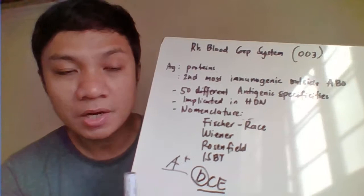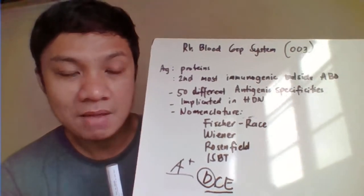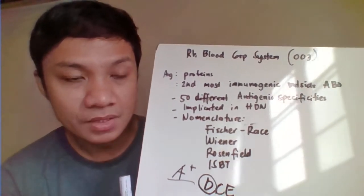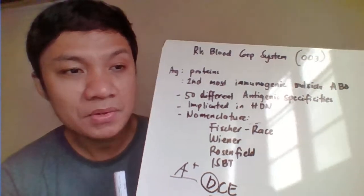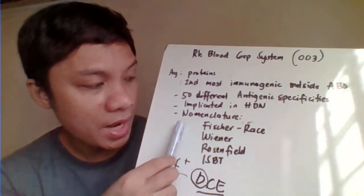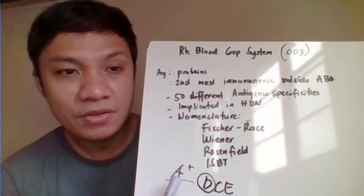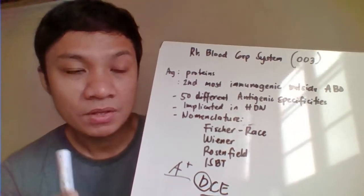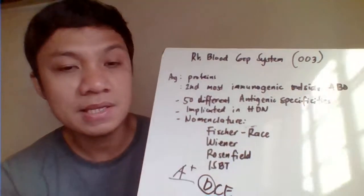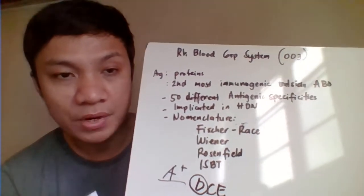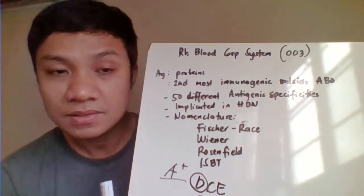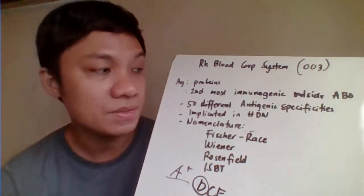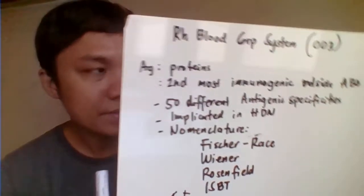Another important feature of the RH blood group system: the antibody here is the IgG antibody. Being IgG, it is most likely implicated in hemolytic transfusion reactions or even hemolytic disease of the newborn, if the mother's blood is not compatible with the baby's or the father's blood.